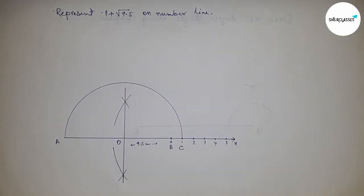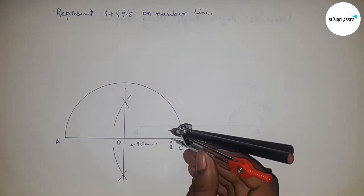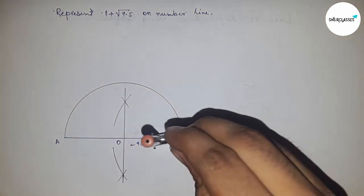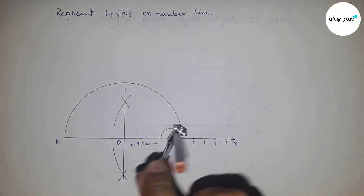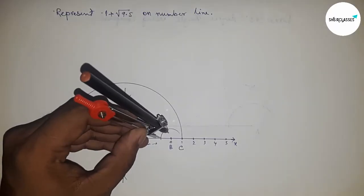Draw a semicircle here. Next, draw a 90-degree angle at point B.